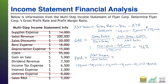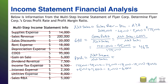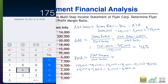For non-operating items, we have a gain of $5,000, dividend revenue of $7,500, and an interest expense of $2,000. That gets us to income before taxes. Then we have a tax expense of $6,500. We have now used all of the given information. So if I get my calculator out and do the math, this should give us net income.